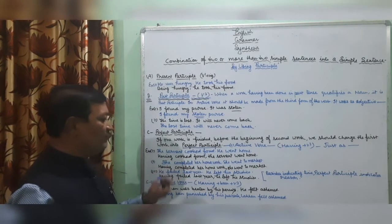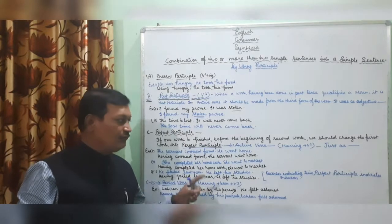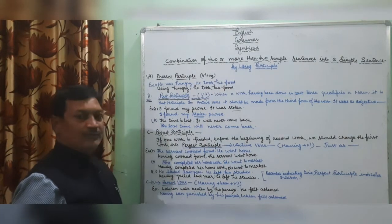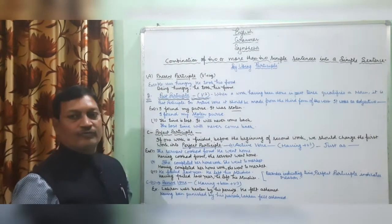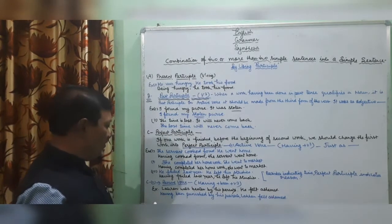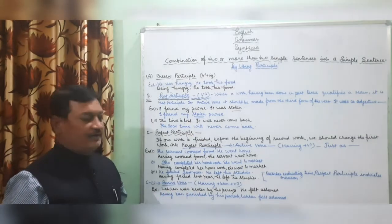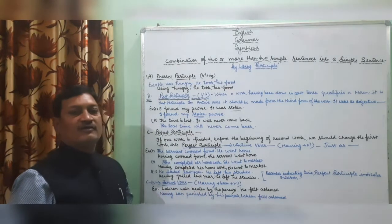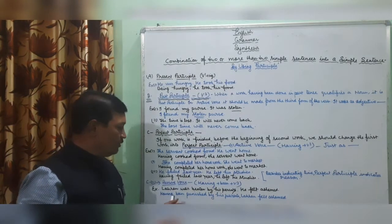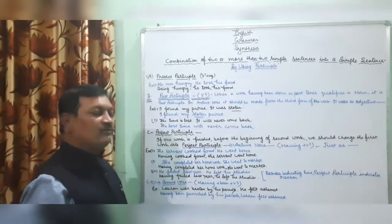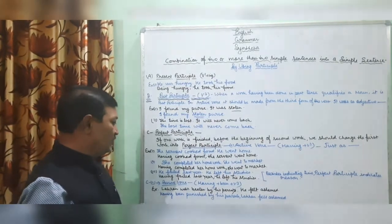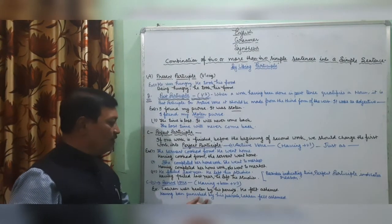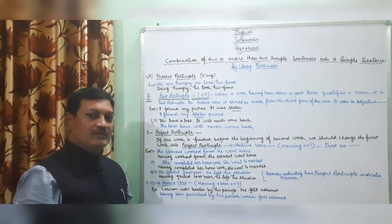Let's see the passive voice of perfect participle. 'Having been' plus the third form of the verb is used. Example: 'Lachan was beaten by his parents. He felt ashamed.' The first sentence is in passive form. So when combining these two simple sentences using perfect participle, we use the passive form: 'Having been punished by his parents, Lachan felt ashamed.'